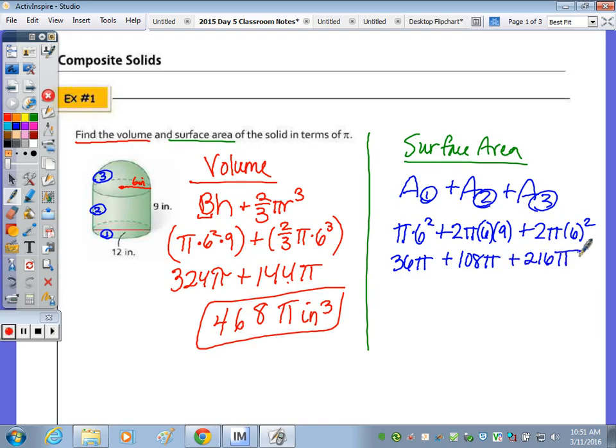So you should have gotten 216 pi inches squared, or square inches.